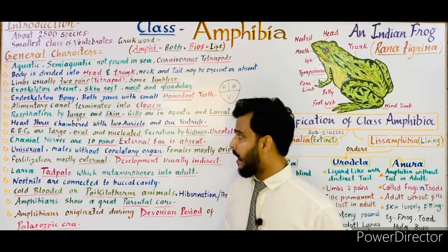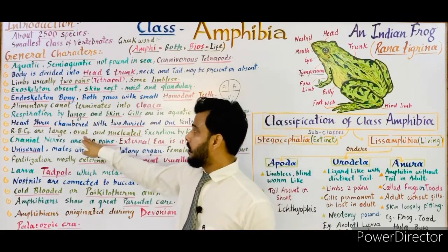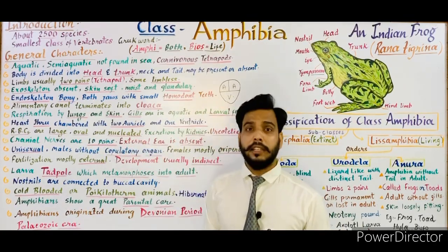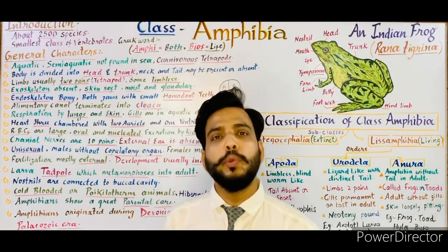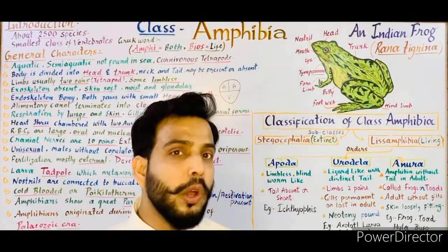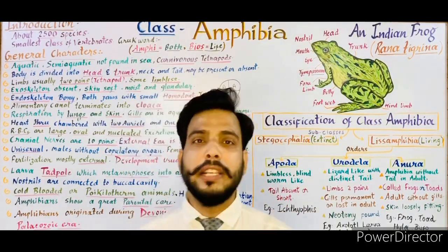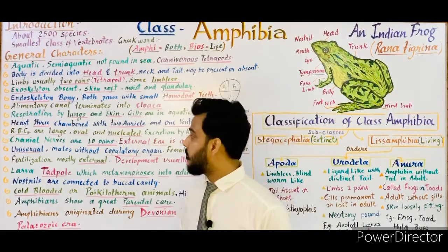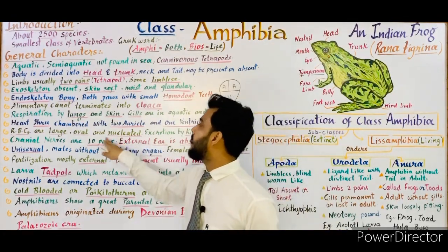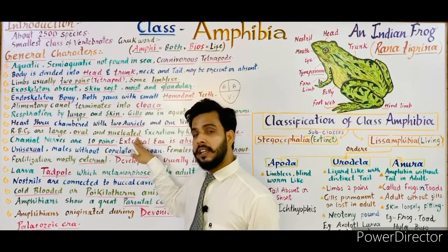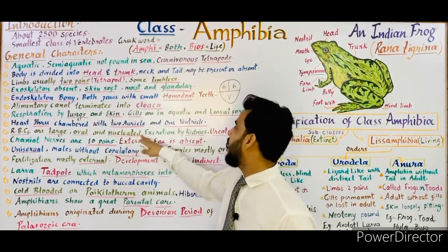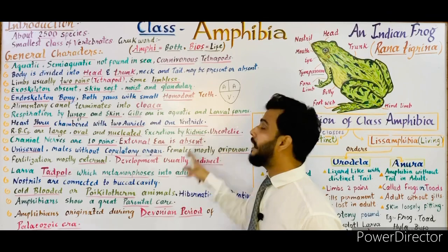The RBCs of amphibians are large, oval-shaped, and nucleated. In contrast, in humans and other mammals, RBCs are non-nucleated — the nucleus is totally absent. But in amphibians, RBCs are nucleated. This is an important point for competitive exams.